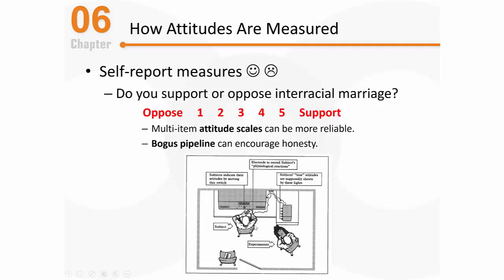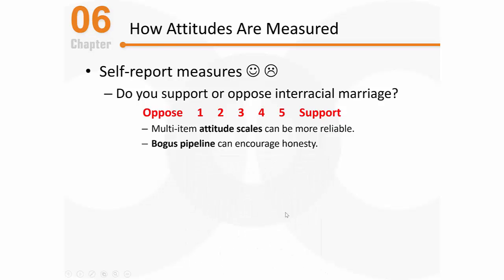An experimenter using the bogus pipeline technique might set up a situation where the research subject sits down, responds to questions via a computer or device, and realizes they're hooked up to wires connected to a machine that supposedly can determine their true attitude. In this situation, the person feels there's no reason to hide the truth because the machine knows it anyway. This is most beneficial when asking about very sensitive topics — sex, drug use, criminal behavior, or sensitive social issues like interracial relationships — situations where we want to prompt people to be more honest.